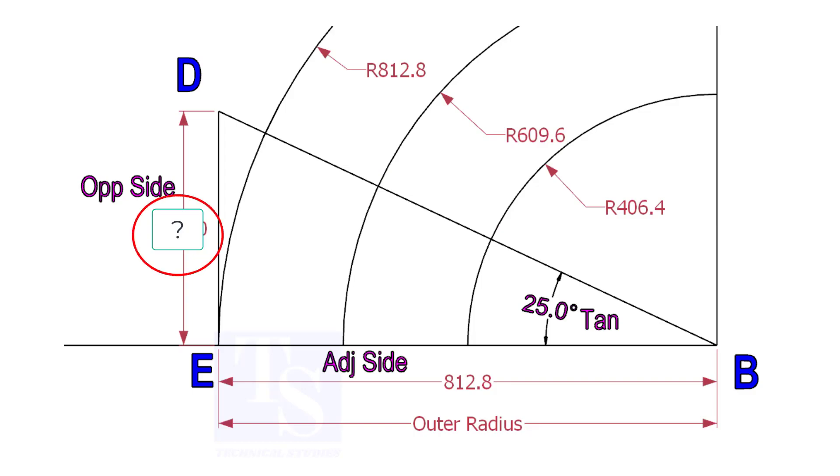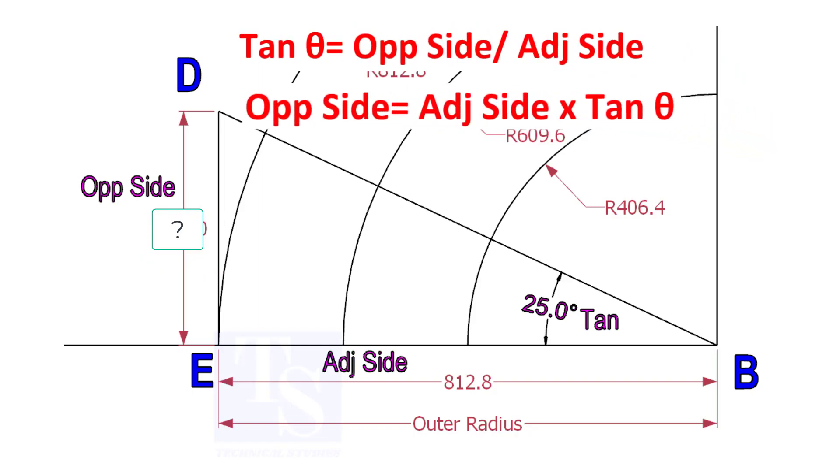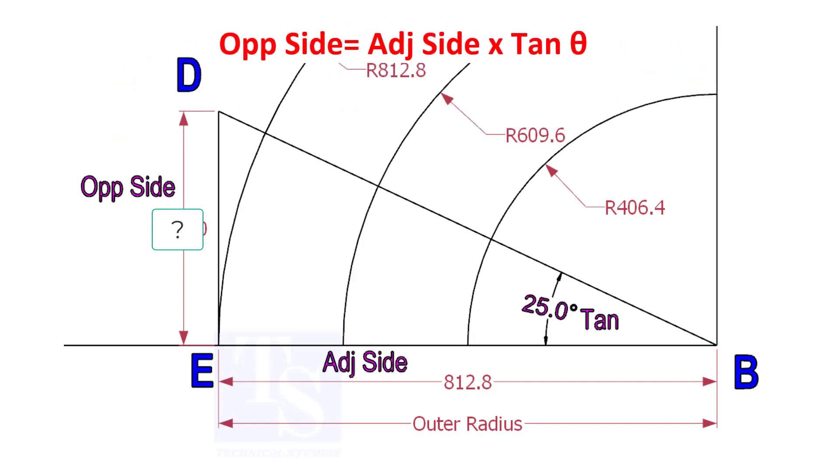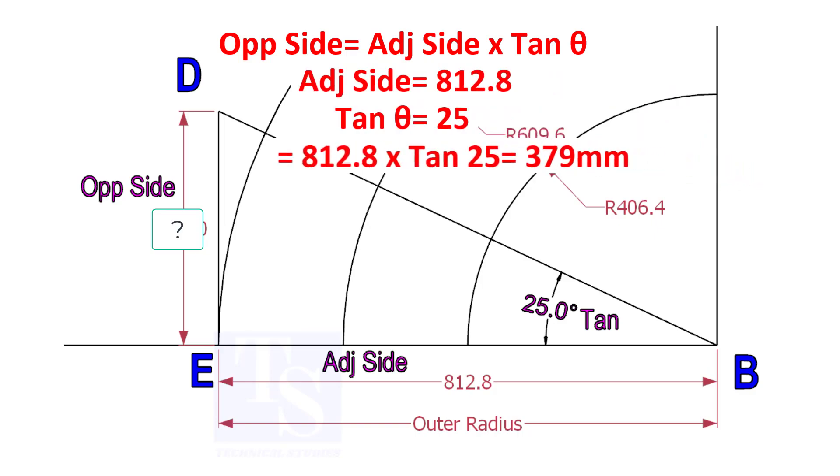To calculate ED, we need to apply the formula tan theta equals opposite side divided by adjacent side. Opposite side equals adjacent side multiplied by tan theta. 812.8 into tan 25 equals 379 millimeters.